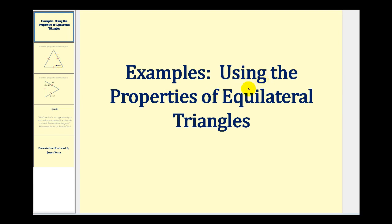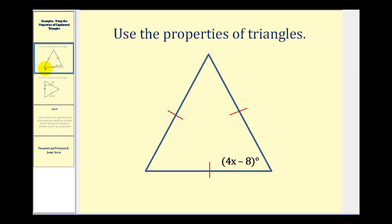Welcome to examples of using the properties of equilateral triangles to determine information about triangles. So here we want to determine the value of x. First thing we should notice is that we have an equilateral triangle, meaning the three sides are congruent.